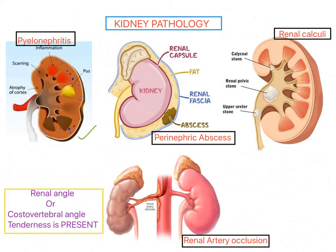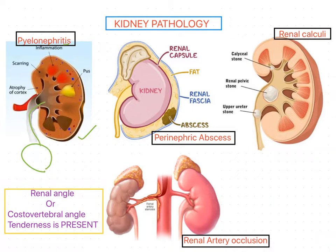Pyelonephritis is caused by bacterial infection — the name indicates inflammation of the kidney due to bacteria, mainly E. coli, sometimes Staphylococcus also. It is due to a specific type of urinary tract infection that normally begins with the urethra, then spreads to the bladder, then ureter, and then to the kidney. Any infection in the bloodstream can also lead to pyelonephritis.